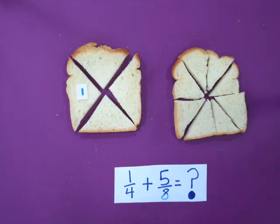The toast on the left hand side has four equal parts, and the toast on the right hand side has eight equal parts. Let's count!